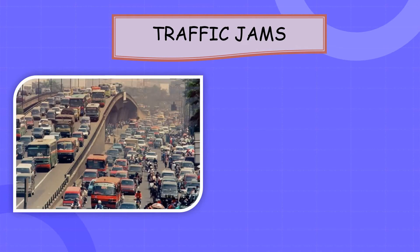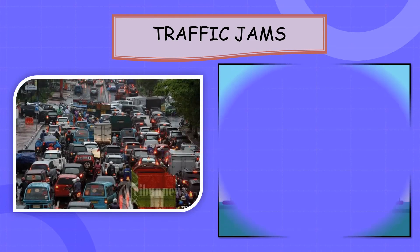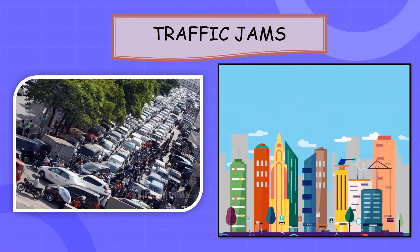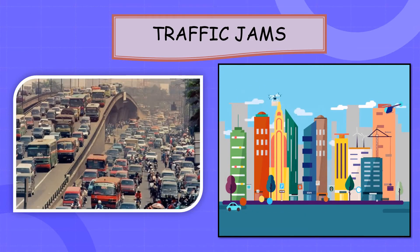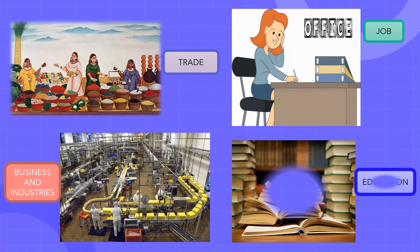Another problem arising due to urbanization is traffic jams. As cities grow, people start living in the outskirts and suburbs, commuting daily to the city center for business, industries, trading, jobs, and better education. The public transportation system is not sufficient, so the number of private vehicles keeps increasing, leading to increased traffic jams. This also increases traveling time and causes people a lot of problems.